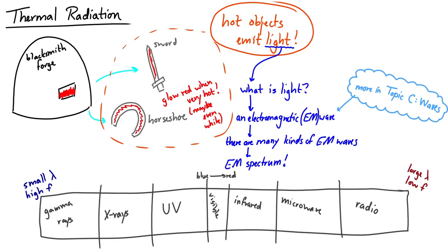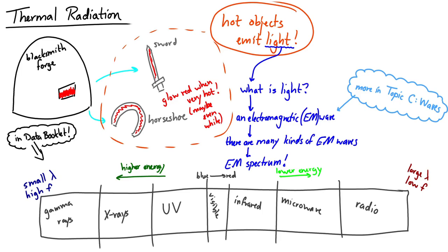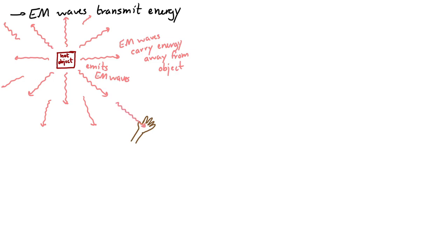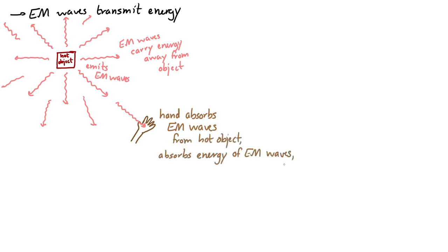If you look at the diagram in your data booklet, the energy of the wave is greater on the left — so gamma rays carry more energy than radio waves. Electromagnetic waves, like all waves, carry or transmit energy. In the context of thermal radiation, a very hot object emits electromagnetic waves that carry energy away. If your hand is nearby, those electromagnetic waves will hit and be absorbed by your hand, and your hand will start to feel warm.